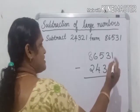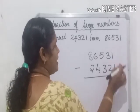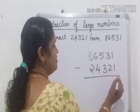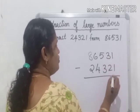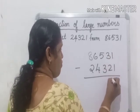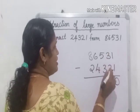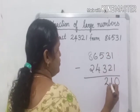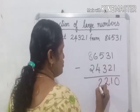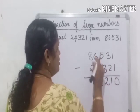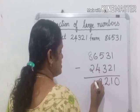Like addition, we start the subtraction from the units place. 1 minus 1 is 0. 3 minus 2 is 1. 5 minus 3 is 2. 6 minus 4 is 2. 8 minus 2 is 6.